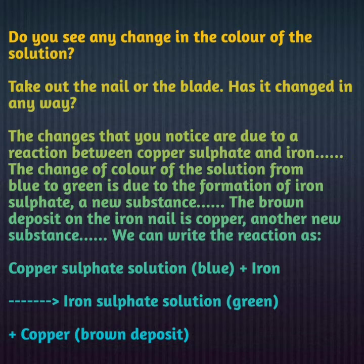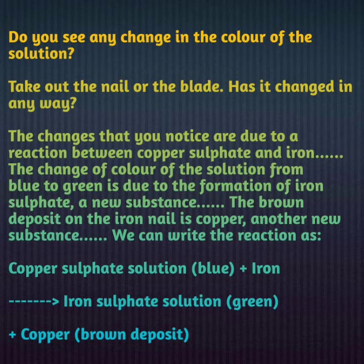Solution green क्यों हो गया? क्योंकि यहाँ पे iron sulfate solution बन गया है. Copper sulfate और iron में reaction हो जाएगा और एक new substance बनेगा — that is iron sulfate. The reaction can be written as: copper sulfate solution + iron → iron sulfate solution + copper. जो copper है वो blade के ऊपर deposit हो जाएगा, इसलिए उसका color brownish हो जाएगा. Copper जो है वो blade पर settle हो जाएगा, और sulfate iron के साथ react करके iron sulfate बना लेगा — new substances formed.